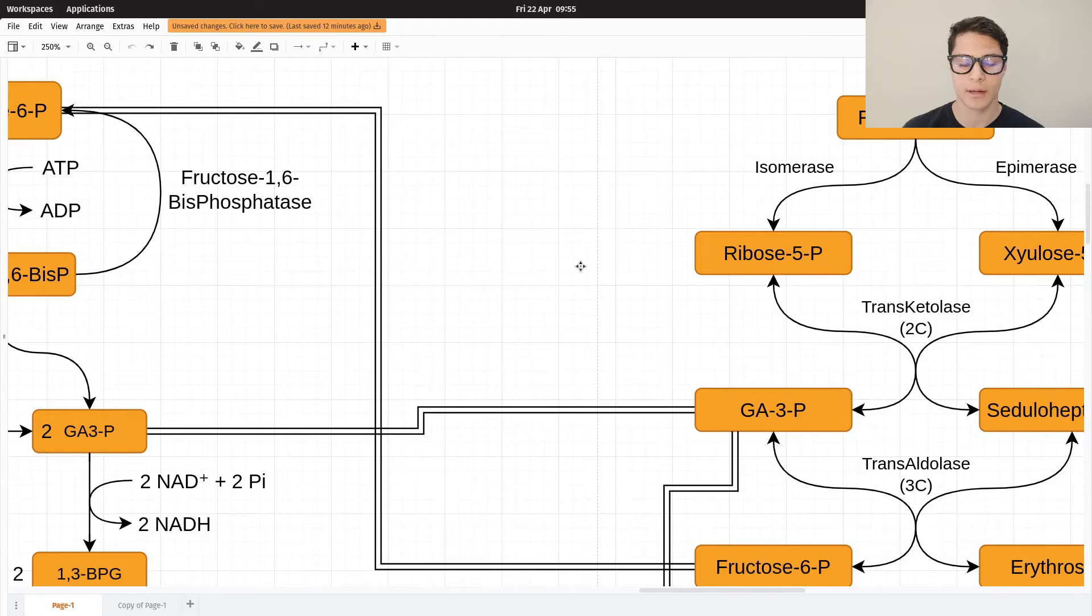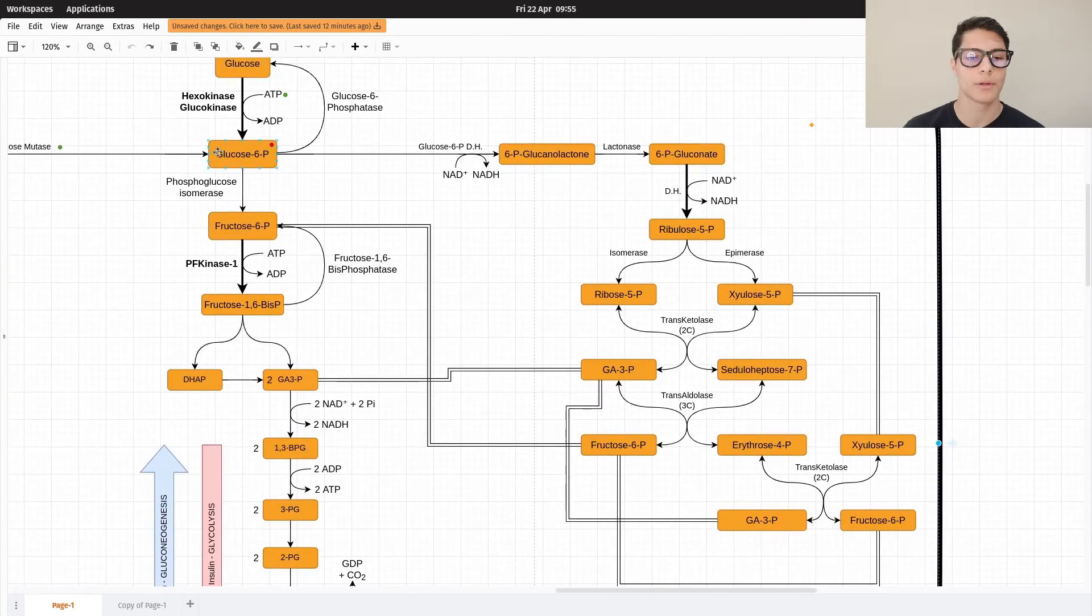Well it means that when you have glucose 6-phosphate, you can either continue the normal glycolysis pathway or you can enter the pentose phosphate pathway and then return into glycolysis or gluconeogenesis.